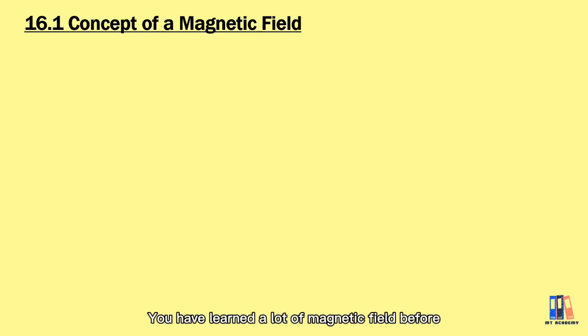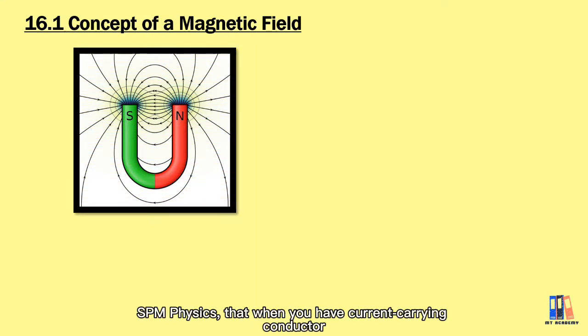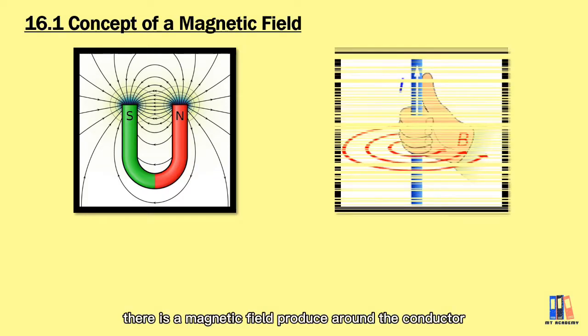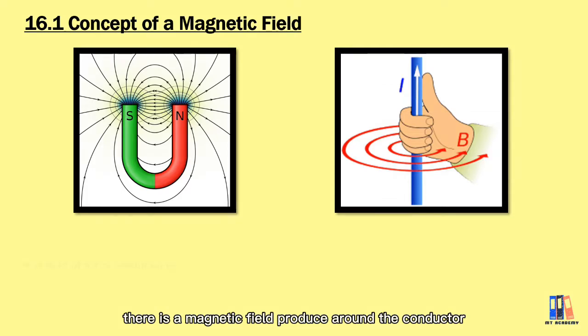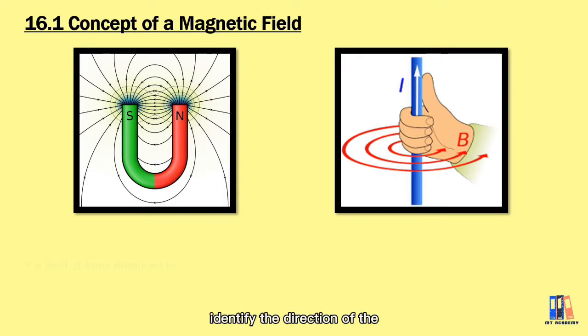First, we're going to look at the concept of a magnetic field. You have learned that the most common source of the magnetic field is produced by the permanent magnet. The second thing you have learned in SPM physics is that when you have a current-carrying conductor, there is a magnetic field produced around the conductor, and you have learned the right-hand grip rule to identify the direction of that magnetic field.